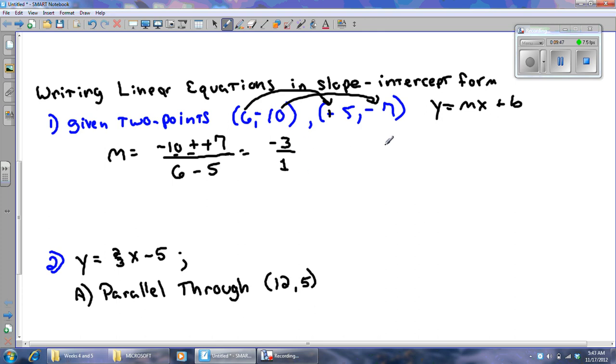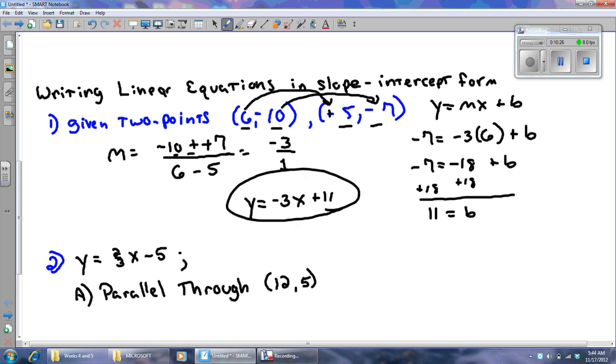All right. I need an x and I need a y. Well, I have an x and a y here. I also have an x and a y here. Which one I use is entirely up to me. I plug in y coordinate, plug in the slope, plug in the x coordinate, and I'm going to simplify and solve for b. And so I'll add 18 to both sides, and I'll get 11 equals b, and so therefore y equals negative 3x plus 11. All right.